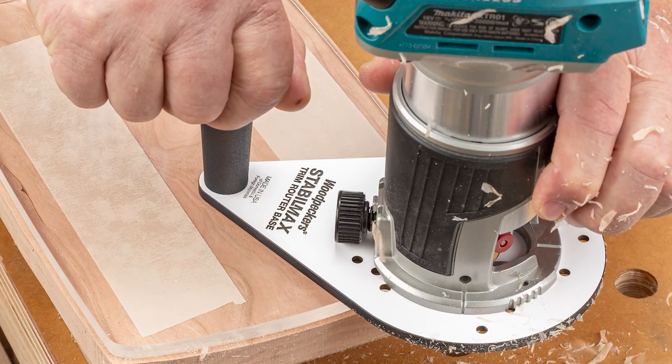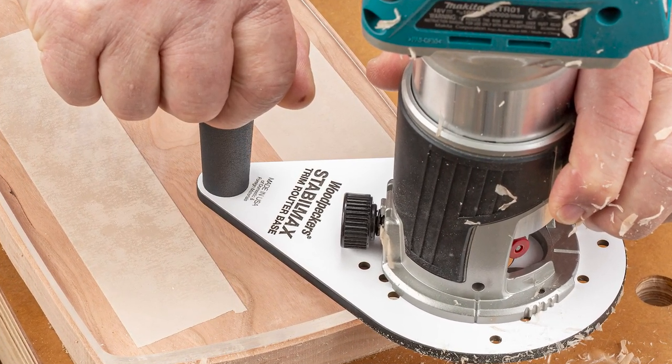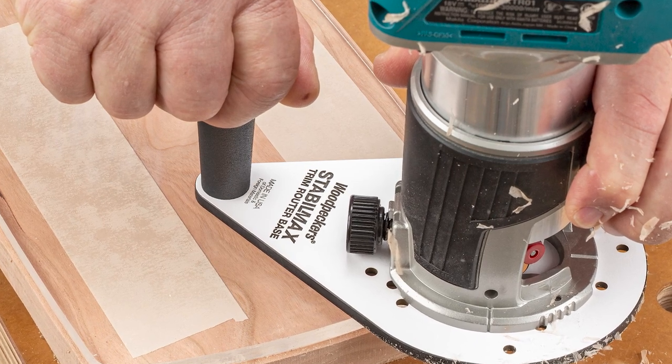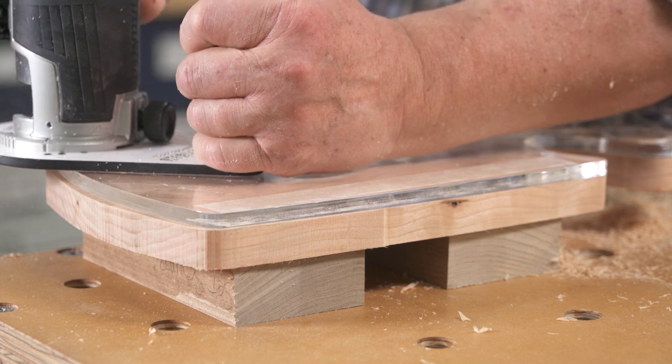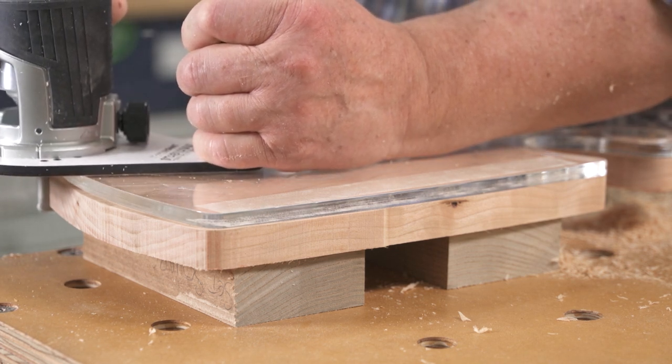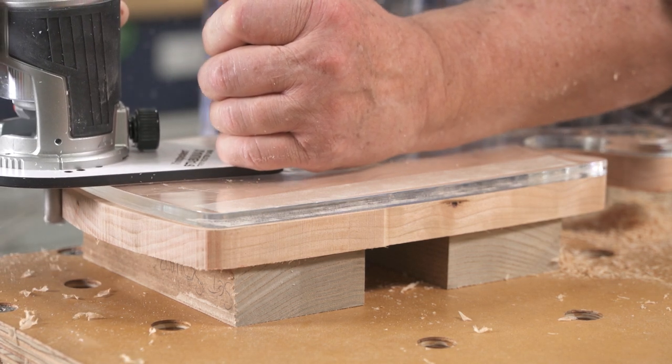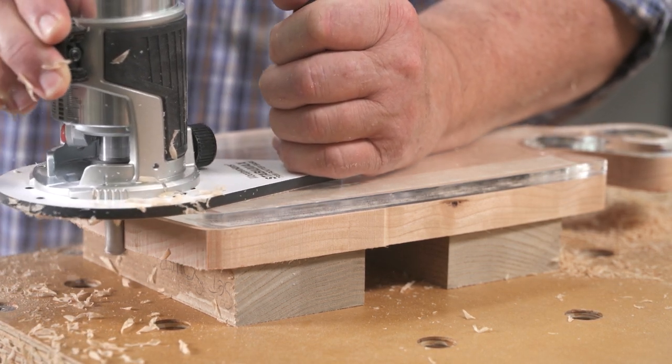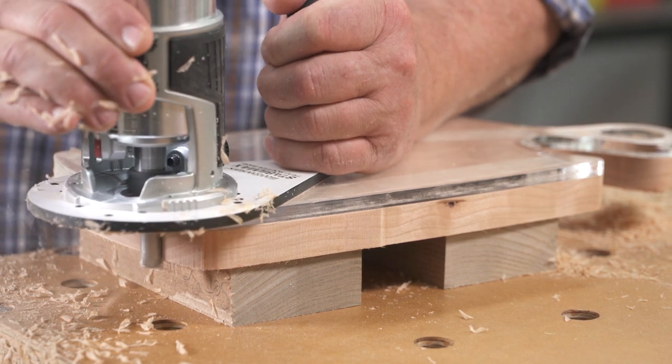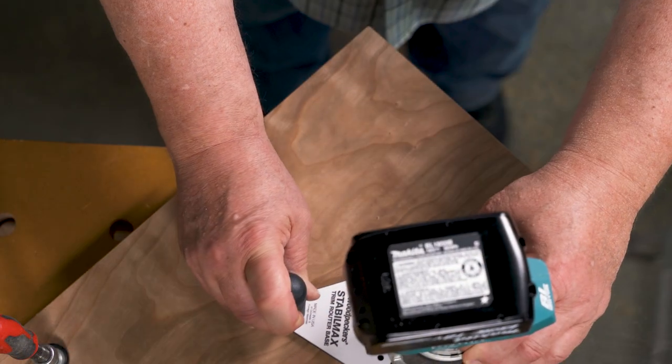StableMax attaches to the fixed base of today's most popular corded and cordless trim routers. The elongated extension and hand grip combine to give you the leverage you need to easily keep the router vertical as you go around corners and across narrow sections of pattern routing projects.